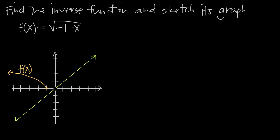The inverse of a function is written as f to the negative 1 of x — that's the notation. It doesn't mean we raise the right-hand side to the power of negative 1; it simply means the inverse of f of x. The inverse of a function is the reflection of that function over the line y equals x, shown here as a dotted line.